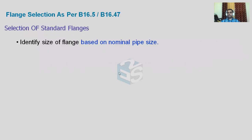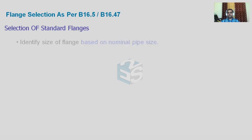So how do we select a standard flange? What is the procedure to select any standard flange? First of all, we have to identify the size of the flange based upon the nominal pipe size. Let's say I want a standard flange for 200 NB — that means 8 inch, so NPS 8 inch is the standard size of that flange, or we can say DN 200.